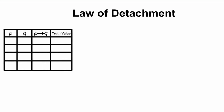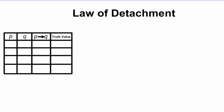The law of detachment — so what's the law of detachment? If we use a truth table that will help us understand it a little bit better. When we fill out a truth table we look at all the different cases for P and Q: if the hypothesis is true and the conclusion is true, a true hypothesis and a false conclusion, a false hypothesis and a false conclusion, and a false hypothesis and a true conclusion.